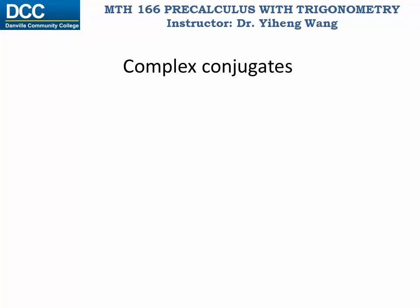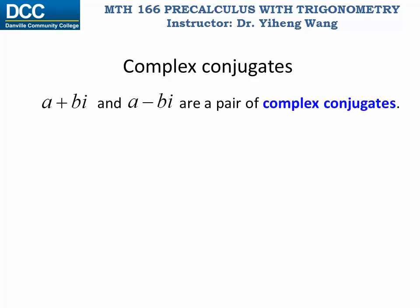We have just introduced addition, subtraction, and multiplication of complex numbers. Now it's time for division. But before we do that, we need to first introduce complex conjugates. Two complex numbers a plus bi and a minus bi are a pair of complex conjugates. They have the same real part a, and their imaginary parts bi and negative bi are negatives of each other.